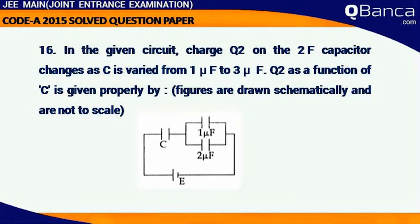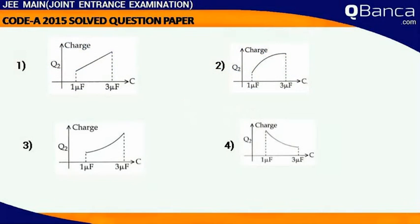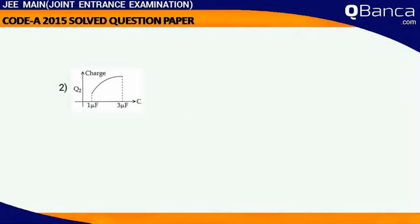In a given circuit, charge Q2 on the 2F capacitor changes as C is varied from 1 microfarad to 3 microfarad. Q2 as a function of C is given properly by figure. Answer 2.